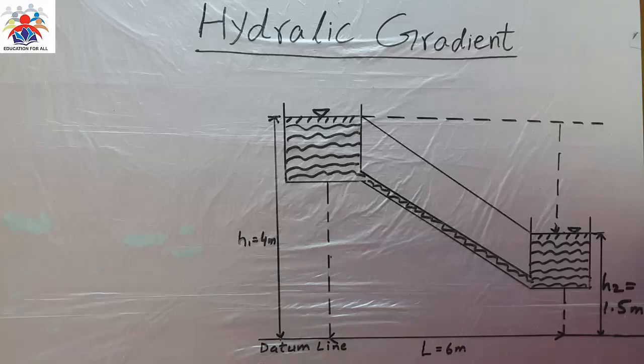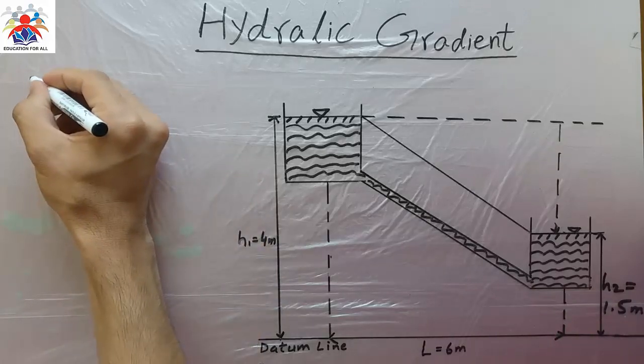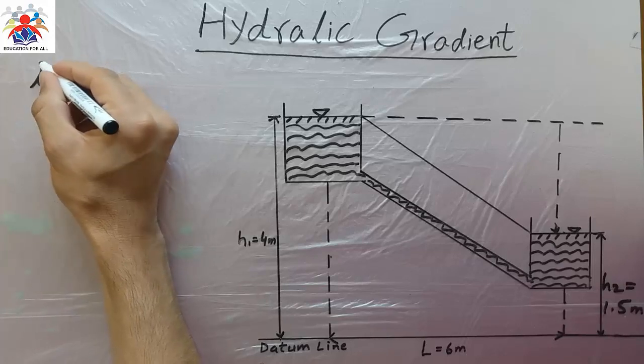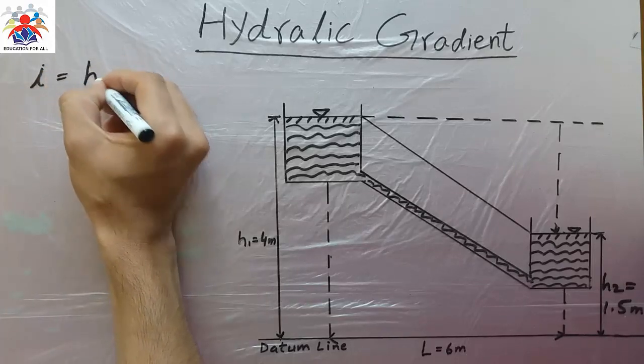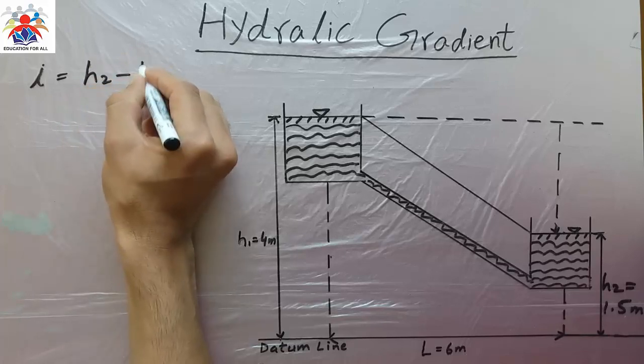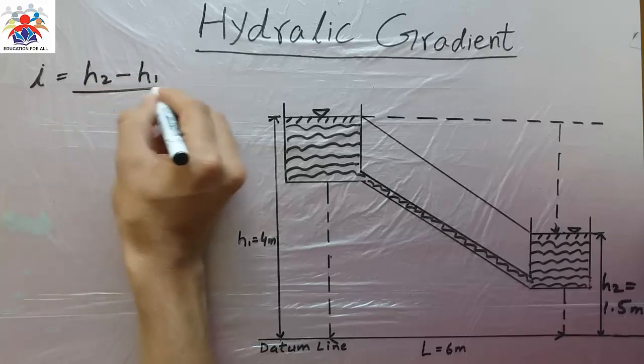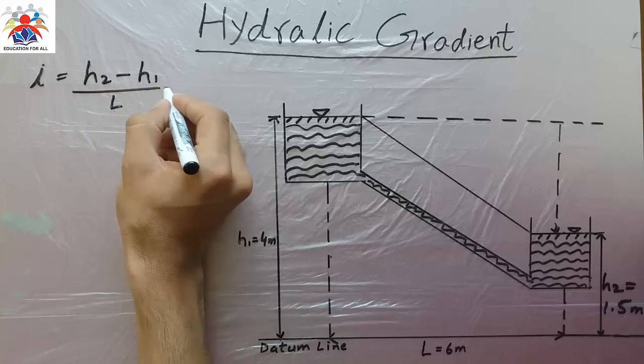As you can see in the diagram we have highest elevation and the lowest elevation. How to calculate hydraulic gradient? We will express hydraulic gradient with I. I is equal to h2 minus h1 divided by L.